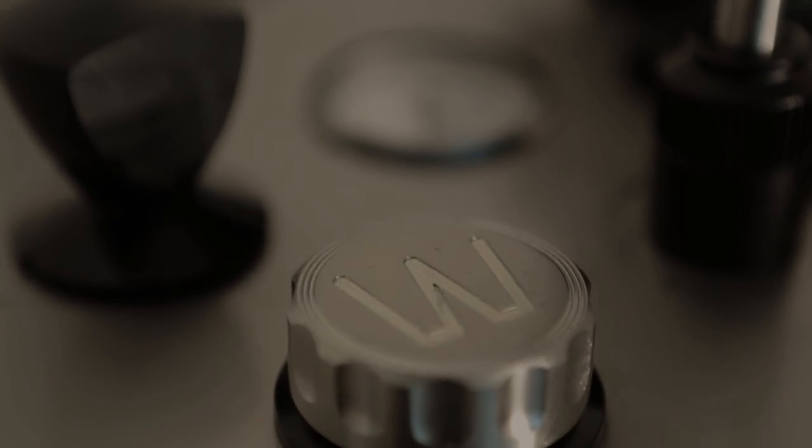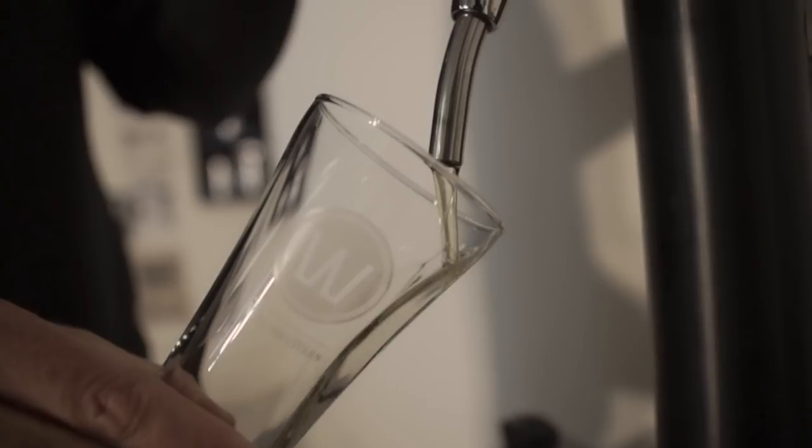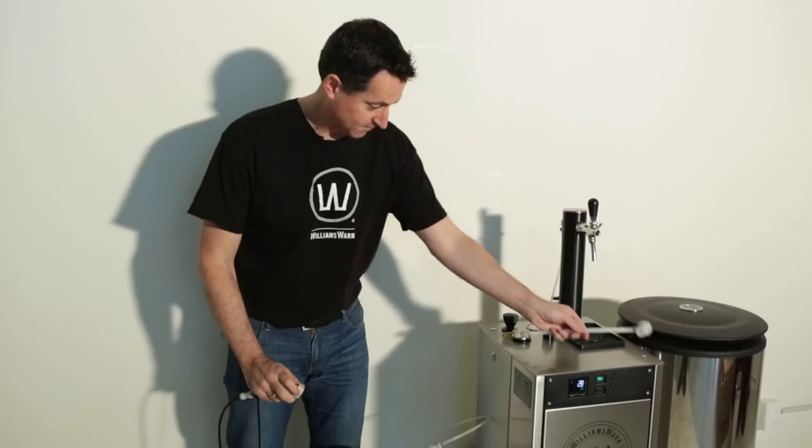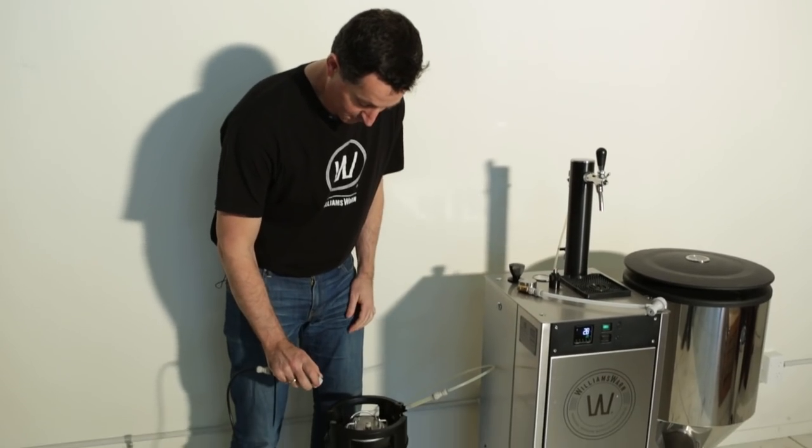Once the beer is ready, you can either drink it directly out of the brewery through the draft beer tap, or you can bottle the beer using the counter pressure bottler, or keg the beer using the counter pressure fittings.